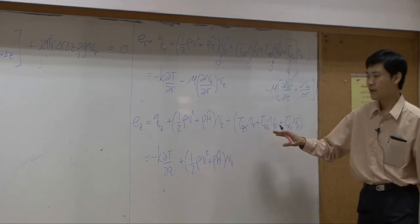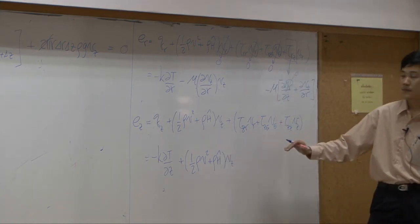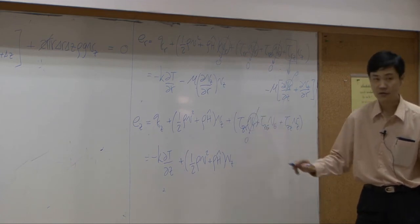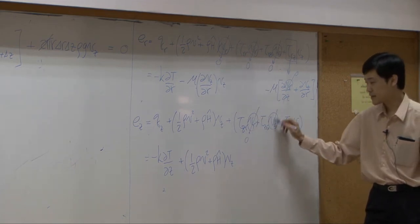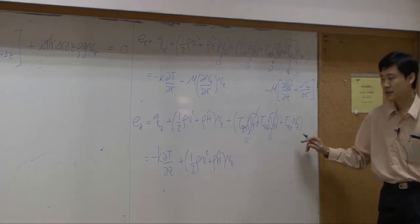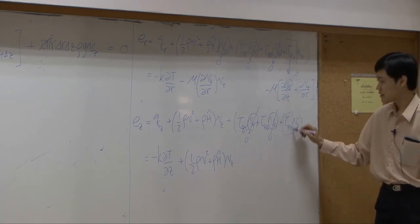What about here? The first term here, V R, that's zero, V Z is zero, V Z is not, tau Z can be expanded.